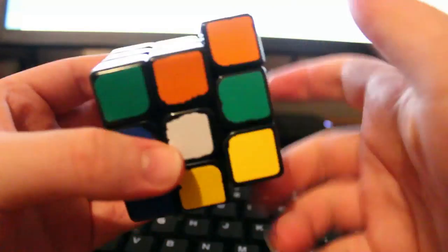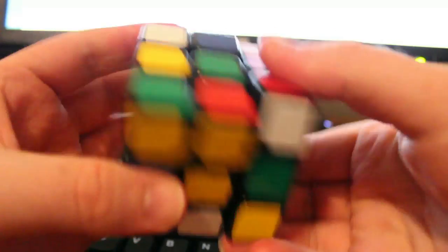Ticked! Step 1. Make two 1x1x3 blocks on the bottom layer. Step 2. Solve the remaining corners.